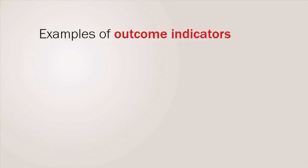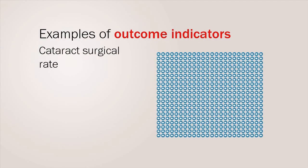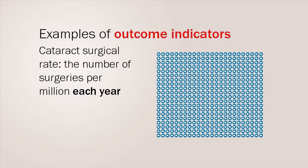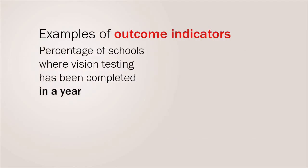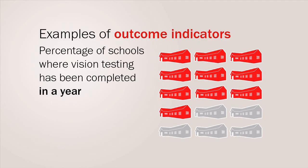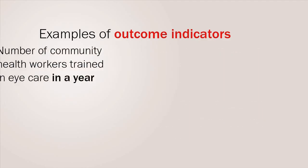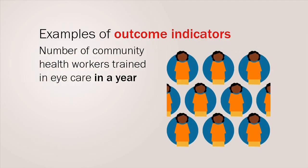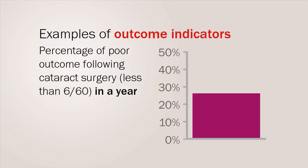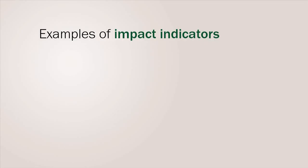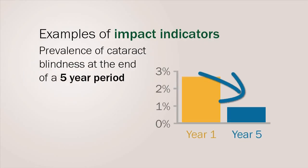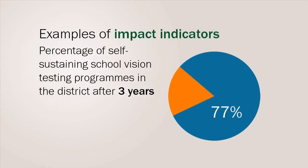Here are some examples of outcome indicators: the cataract surgical rate — the number of surgeries per million each year; the percentage of schools where vision testing has been completed in a year; the number of community health workers trained in eye care in a year; and the percentage of poor outcome following cataract surgery in a year. Here are some examples of impact indicators: prevalence of cataract blindness at the end of a five-year period; and percentage of self-sustaining school vision testing programs in the district after three years.